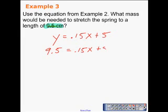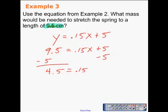First thing we'll do is subtract 5 from both sides. Giving us 4.5 is equal to 0.15x. Then we will divide each side by 0.15. Which will give us x is equal to 30.